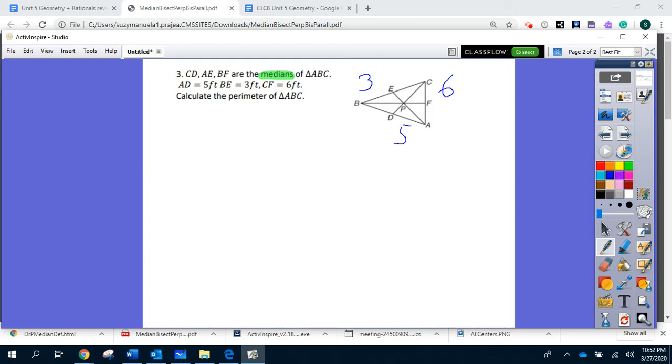What is required to calculate the perimeter of the triangle?